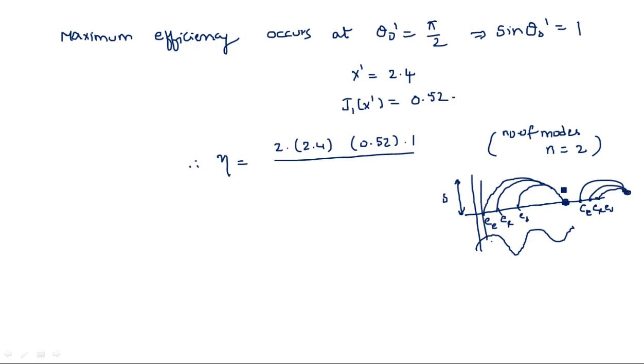This particular bunching is one mode, and the next bunching is another mode. We have taken n = 2 modes.